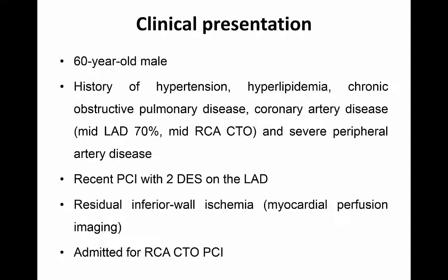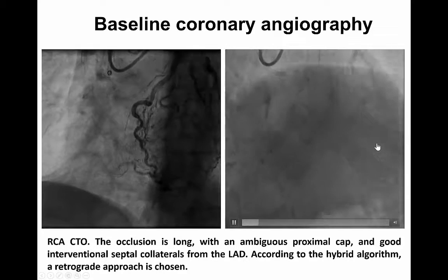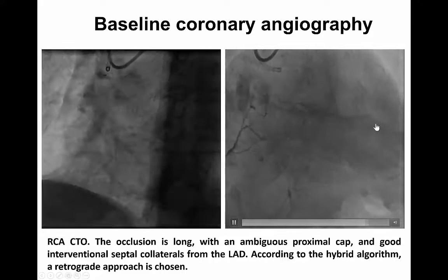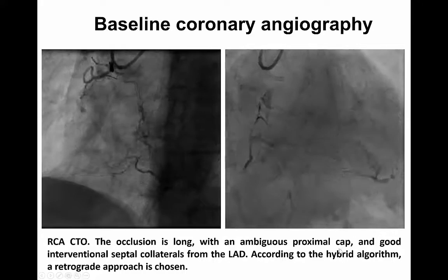This is the story of a 60-year-old man with a history of hypertension, hyperlipidemia, COPD, coronary artery disease, and severe peripheral artery disease. He had just undergone two drug-eluting stent implantations on the mid-LAD. Now the patient presents with residual inferior wall ischemia on myocardial perfusion imaging and is admitted for RCA-CTO-PCI. This is the baseline angiogram of the RCA-CTO. Although the occlusion is very long, with an ambiguous proximal cap and good collaterals from the LAD through the septum, and according to the hybrid algorithm, a retrograde approach is chosen.